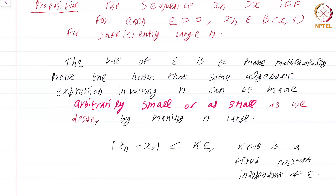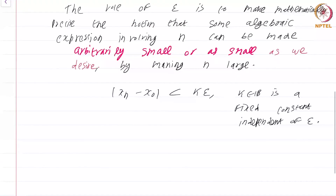Instead of getting |x_n − x_0| less than epsilon, you might get it less than 3·epsilon. Now, if you have been following what I am saying, this should not really matter, because the role of epsilon is to say that |x_n − x_0| can be made arbitrarily small. If it can be made three times arbitrarily small, three times arbitrarily small is still arbitrarily small. This is of no consequence, and we illustrate this with the following lemma.